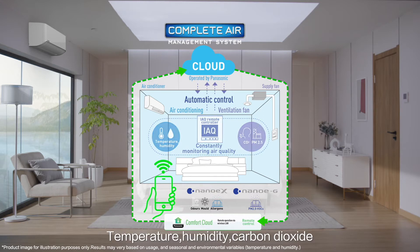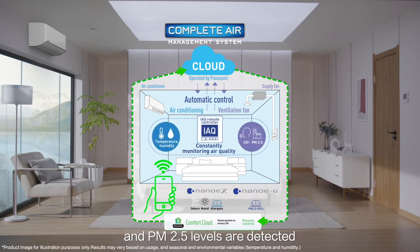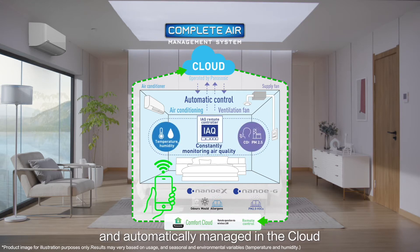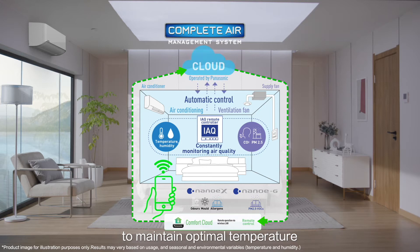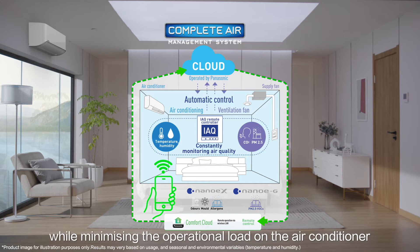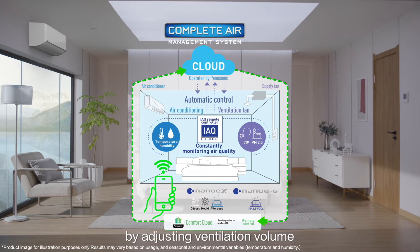Temperature, humidity, carbon dioxide, and PM 2.5 levels are detected and automatically managed in the cloud to maintain optimal temperature, humidity, and air quality, while minimizing the operational load on the air conditioner by adjusting ventilation volume.